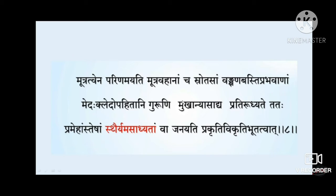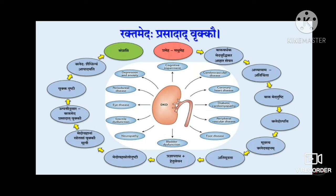The mula of the mutravaha srotas — which is the kidney — gets upahita or pratirudhya by meda and kleda. Once the mula of the mutravaha srotas becomes blocked by this meda and kleda, the prameha becomes asadhya, which we can correlate with diabetic kidney disease in modern sciences.